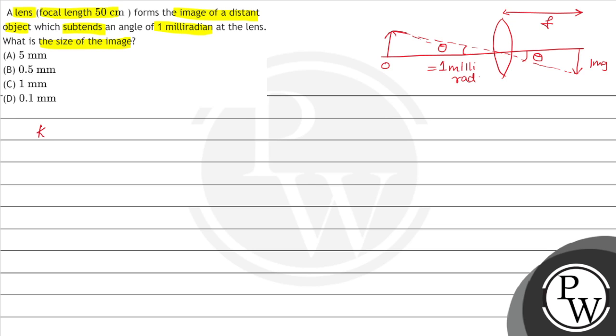The size of the image is equal to f times theta. So here, how much is f? f is 50 cm. And how much is theta? 1 milliradian. So what will happen? 50 multiplied by 1 times 10 to the power minus 3.